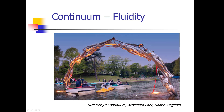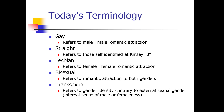There is some fluidity involved in human sexuality — it is not always fixed. Terminology for describing different populations includes: gay, referring to male-to-male romantic attraction; straight, referring to those self-identified at a Kinsey level of 0; lesbian, referring to female-to-female romantic attraction; bisexual, referring to romantic attraction to both genders; and transsexual, referring to a gender identity contrary to the external sexual gender — which refers back to the internal sense of male-ness or female-ness discussed in Part 1.